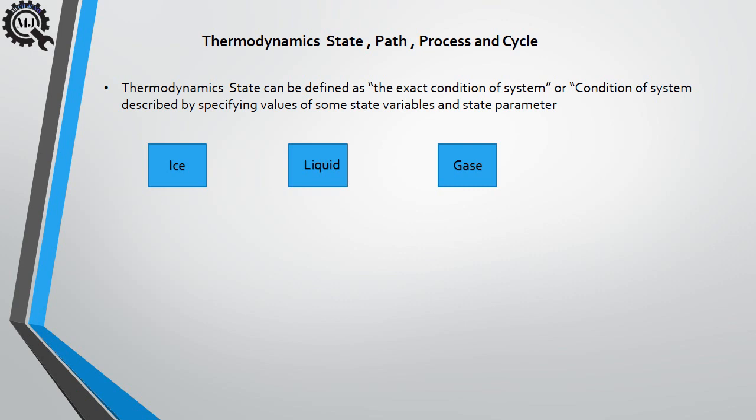How do we define state using properties? For example, I have taken the property of temperature T at 0 degrees Celsius — that system is in solid state, and at room temperature it is in a second state. So properties define the system's condition; using properties we can find the state of the system.